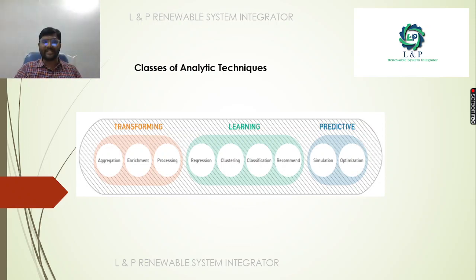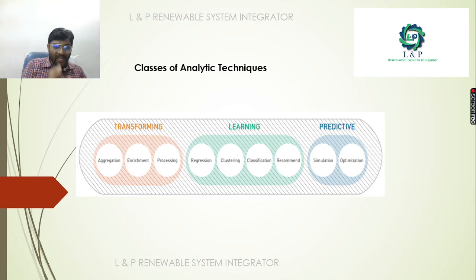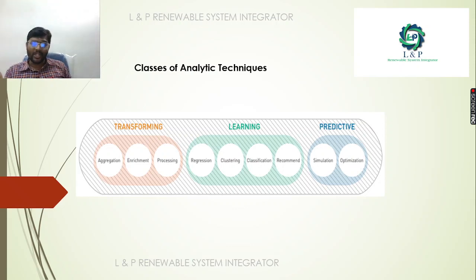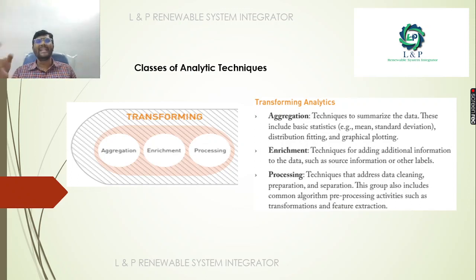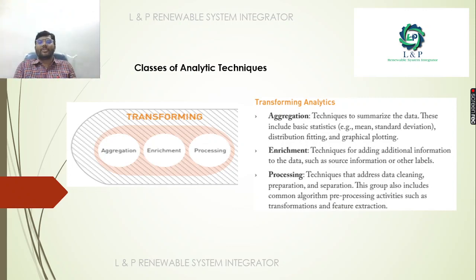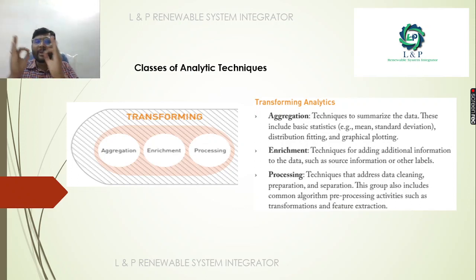The classes inside analytical techniques: three important things should happen — Transforming, Learning, and Predictive Insight. Under Transforming: aggregation, enrichment, and processing. Aggregation is a technique to summarize the data — for example, using standard deviation and graphical plotting. Enrichment is a technique for adding additional information to the data such as source information or other labels. Processing addresses data cleaning, preparation, and separation, and includes common algorithm pre-processing activities such as transformation and feature extraction.